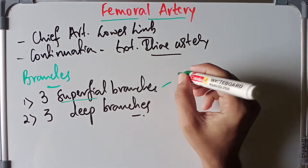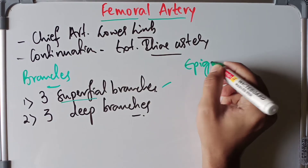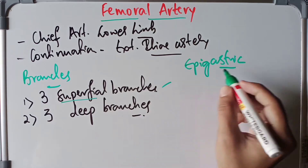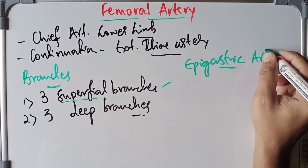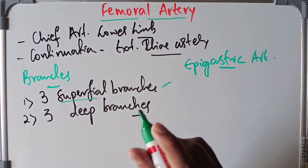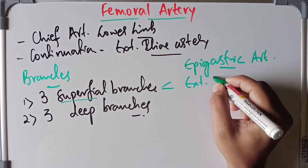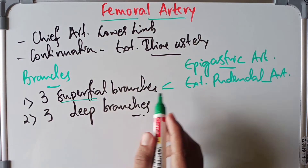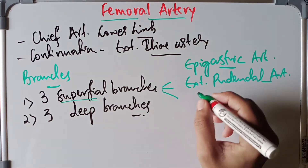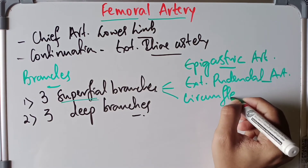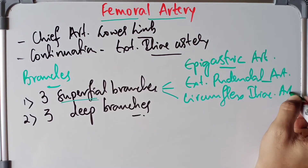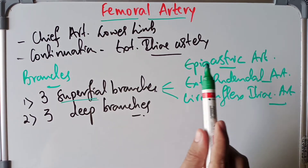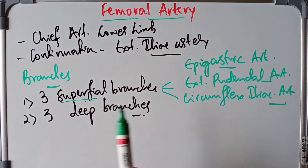To summarize the three superficial branches of the femoral artery: the superficial epigastric artery, the superficial external pudendal artery, and the superficial circumflex iliac artery. Remember to prefix all of these with 'superficial.'